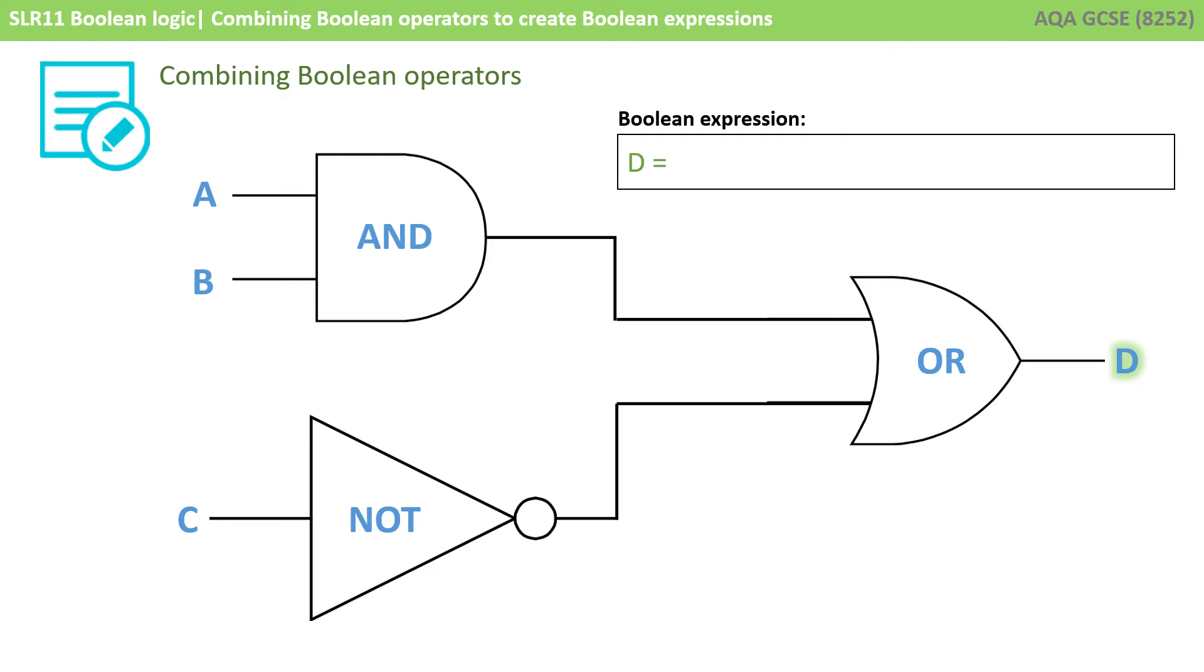So we're going to start with D equals because the output is D. So what is D equal to? Well D is equal to the output of A and B or NOT C. So at the top there we can see the textual-based Boolean expression for the logic diagram on the screen: D equals A and B OR NOT C.